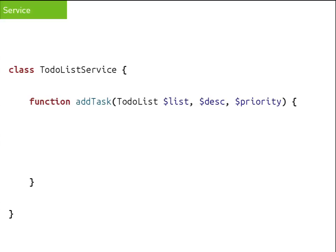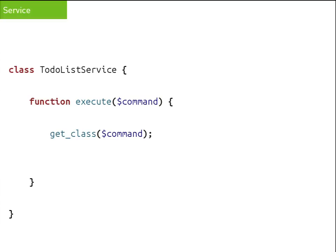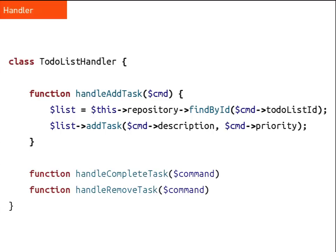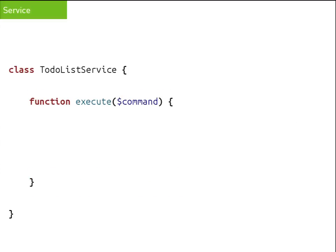How does the service find the right handler? You could do a get-class on the command and map it in an array, or have the command get its own name and use that as the name of the handler, or have the command execute itself. Whatever strategy works best for your framework — I don't care. What goes in a handler? Basically everything that's left over, which in this case isn't much: look it up in the repository, add the task, dispatch the domain events. This might seem like a lot of boilerplate, but the entire service is now completely reusable, completely composable — you could use the same handler for multiple operations. Easy peasy.